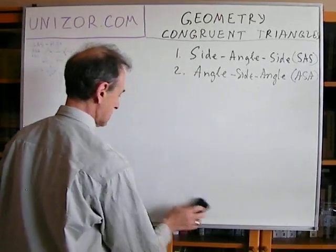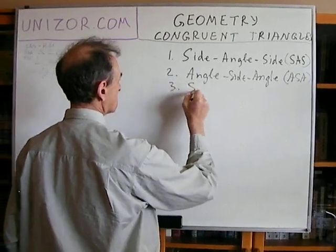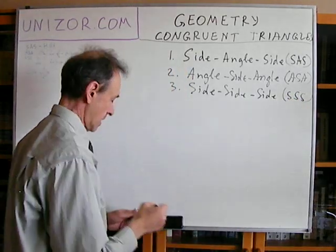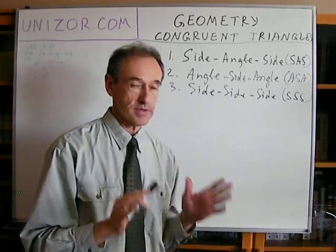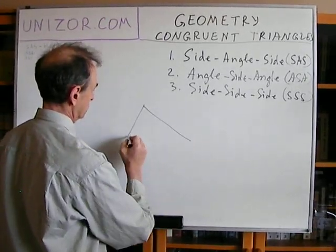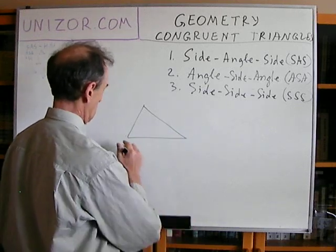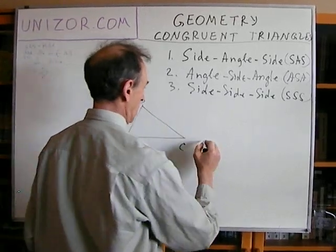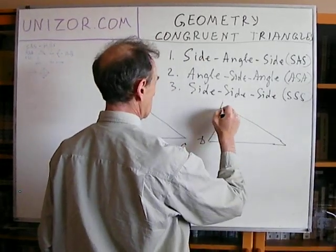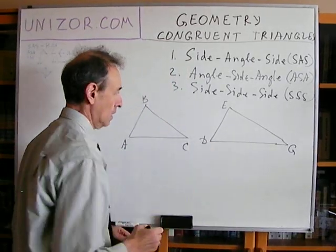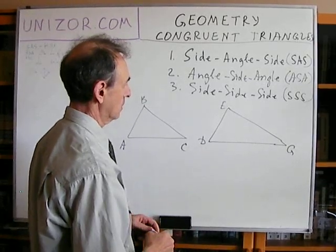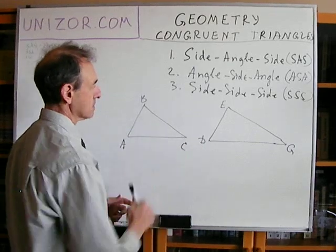The third statement is Side-Side-Side, SSS. This is also a theorem and I'm going to prove it. Let's consider triangle ABC and another triangle GEF which has exactly the same sides. How can we prove that if all three sides are pair-by-pair congruent to each other, then the triangles are congruent?